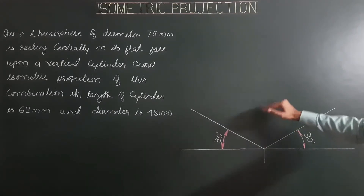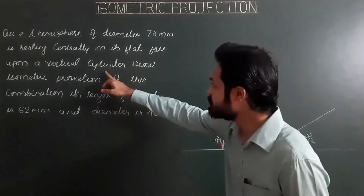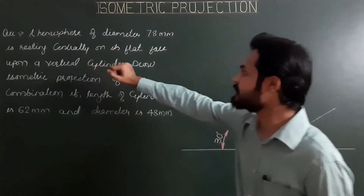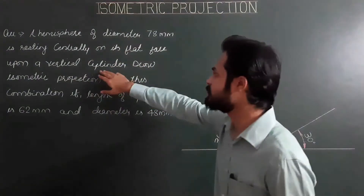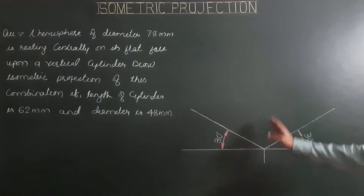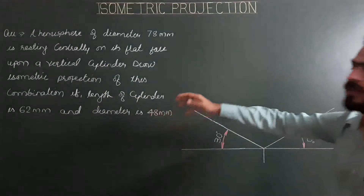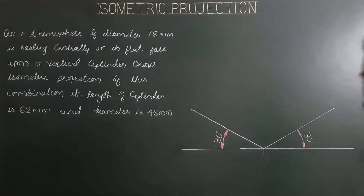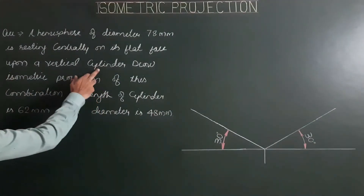The cylinder is resting on its circular end on HP. The first circular end is on HP, and on the second circular face of the cylinder, this hemisphere is resting on its flat face. First, we have to draw the projections of the vertical cylinder, and then we'll place the hemisphere on the upper circular face of the cylinder.